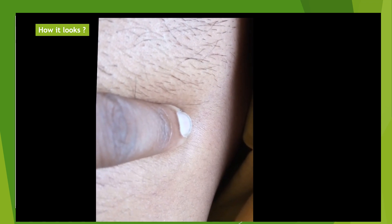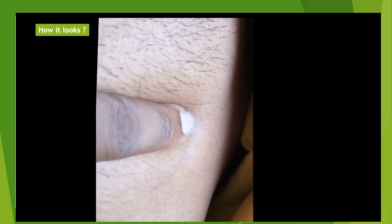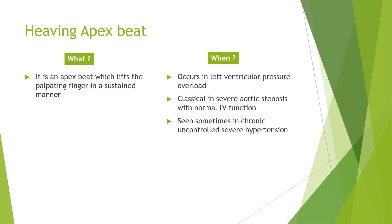This is how the apical impulse feels or looks when felt by an individual. It is the apex beat which lifts the palpating finger in a sustained manner. This sustain is somewhat subjective — if you feel that it is lifting your finger reasonably well, you can call it a heaving apex beat. It need not be as classical as shown in the video; it may be less pronounced.